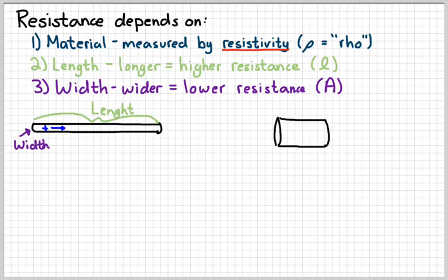Versus something that looked more like this. That was short and wide. So the long skinny thing would have a very high resistance. The short wide thing would have a low resistance.